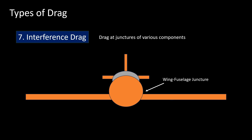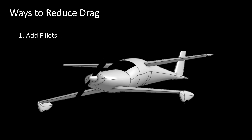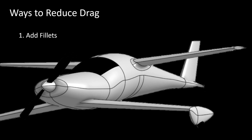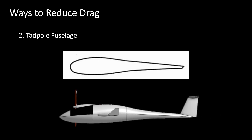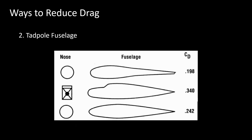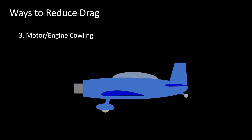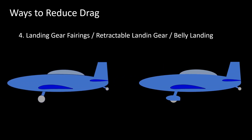Now let's look at some ways to reduce drag. Add fillets at junctures such as wing and fuselage or tail and fuselage to reduce interference drag. If possible, use tadpole-shaped fuselages to reduce parasitic drag — the tadpole fuselage shape has lesser drag and that is why it is used on sailplanes or gliders. Here you can see the drag coefficients for different types of fuselages. Cover the motor or engine with a cowling — this not only streamlines the body but also improves aesthetics. Add landing gear fairings or consider using retractable landing gears. Belly landing can also be considered. If using fixed landing gear, make the struts airfoil-shaped with round leading edges and sharp trailing edges.